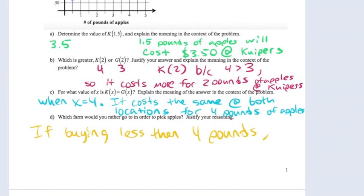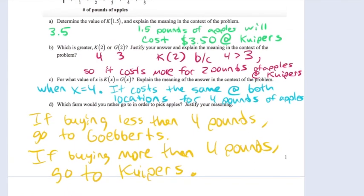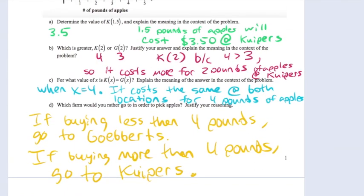So the answer to this question D of which farm should I go to depends on how many apples I want. If I'm buying less than four pounds of apples, I want to go to Gobert's because that is less expensive. If I'm buying more than four pounds, I would want to go to Kuipers Farm because now it would be less expensive. So there's no easy answer to that question; it depends on how many apples you want.